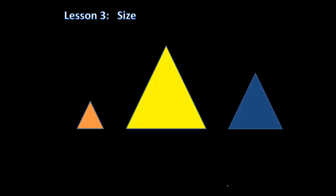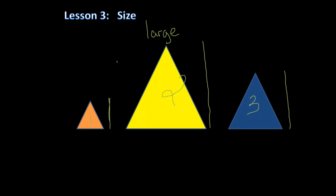Let's test our knowledge on small, medium, and large again. Here we have three objects — we'll number them. The first object is number one, the second is number two, and the last is number three. The first object looks to be smaller than the second object. The second object seems larger than the first, and the third object seems smaller than the second. So we think object number two is probably the large one, object one is the small object, and object three is in between.